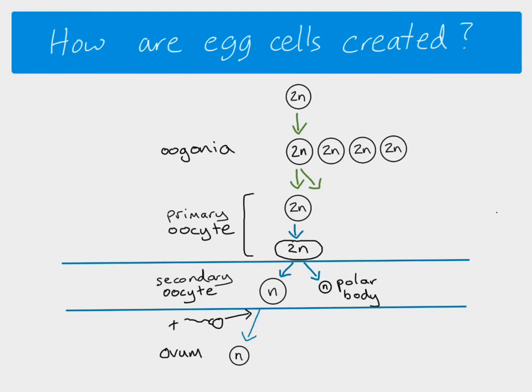Final thing to mention is that when the rest of meiosis 2 is triggered, we will also then get a polar body being formed, which then does not develop and takes no further part. OK, that's it. Thank you.